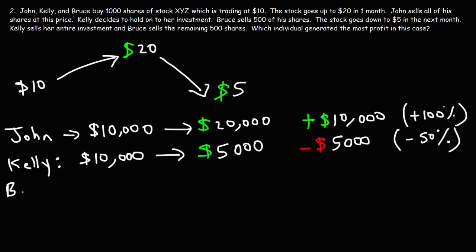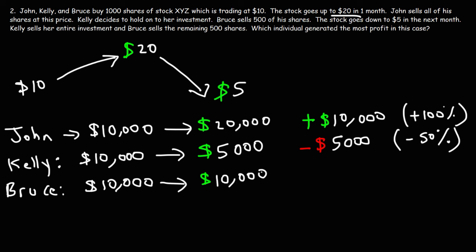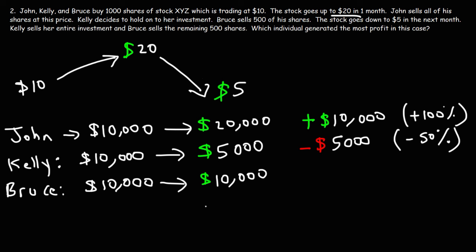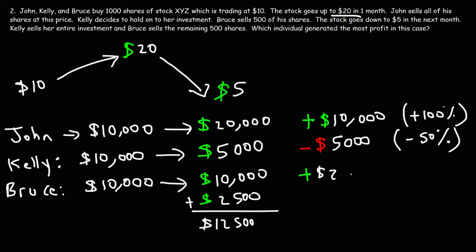That's a return of negative 50%. Now let's consider Bruce. He started with the same initial investment. He sells 500 of his shares at $20, getting $10,000. Then the stock goes down and he decides to sell the rest of his shares at $5 — 500 times $5 is $2,500. So his net proceeds are $12,500, which means he has a net gain of $2,500, or a 25% return.